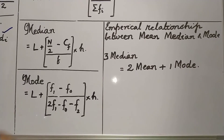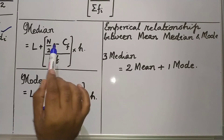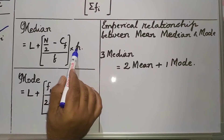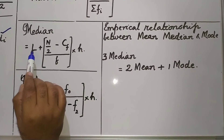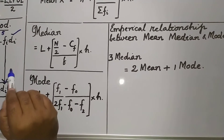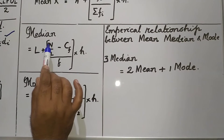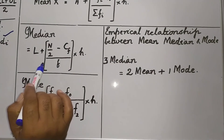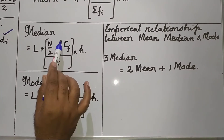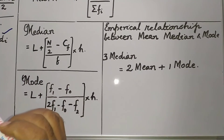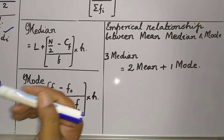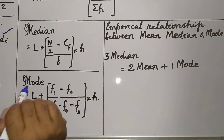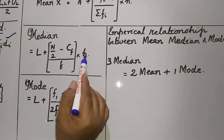Median is given by: L plus N by 2 minus CF, whole divided by F, into H. L will be the lower limit of the median class. N will be the total number of observations, or sigma fi. CF is the cumulative frequency of the class preceding the median class. F will be the frequency of the median class, and H will be the class size.